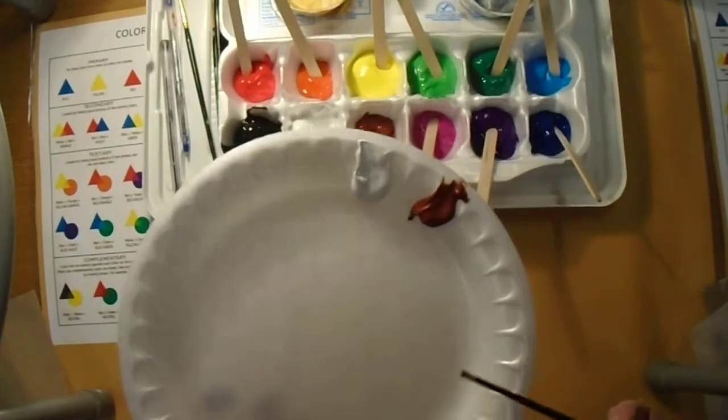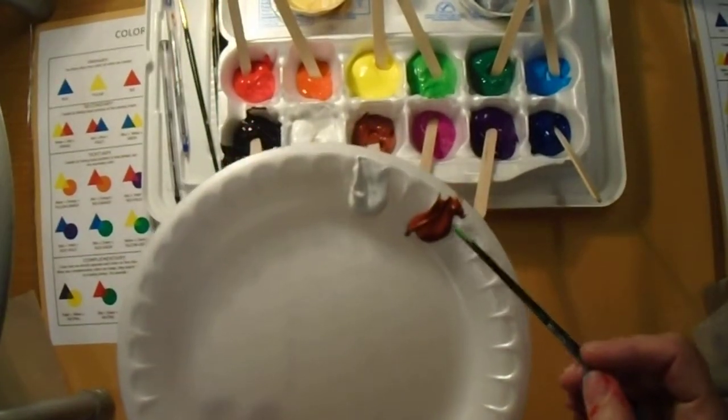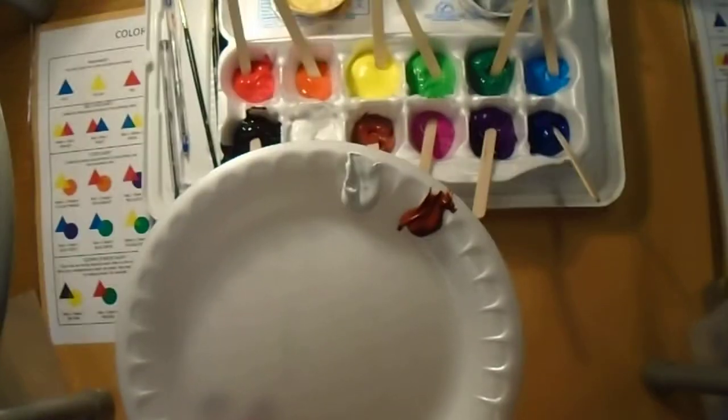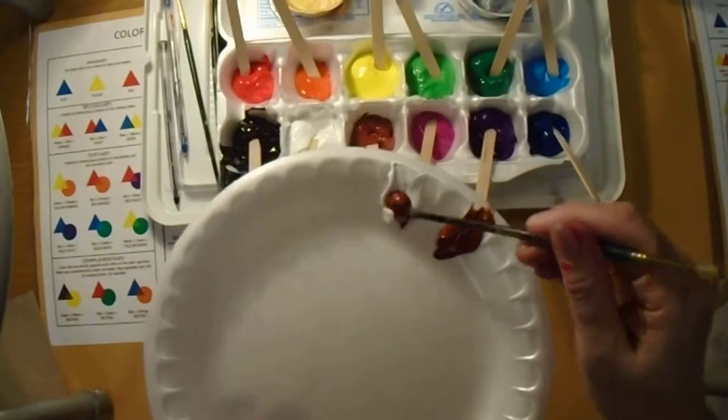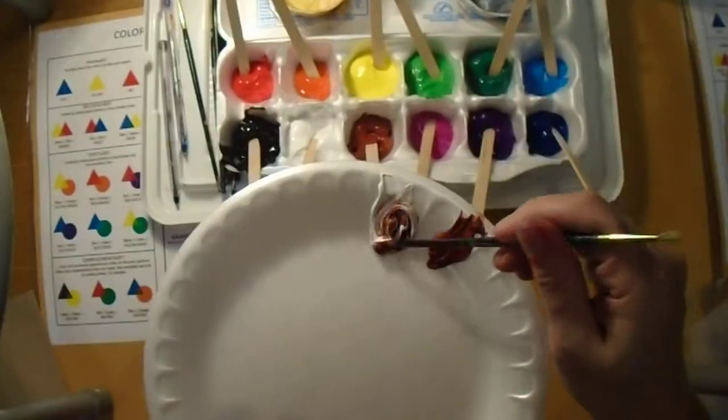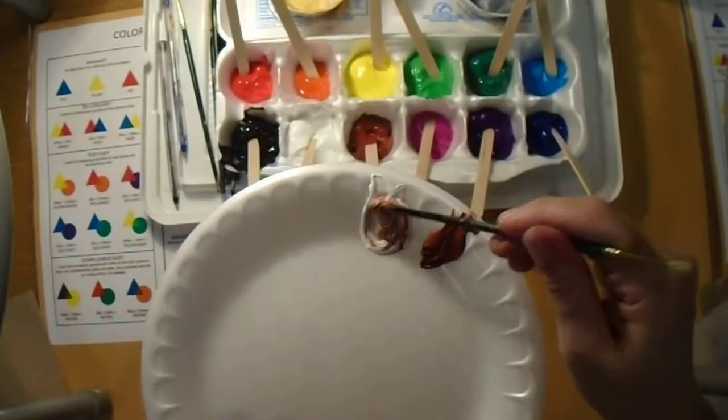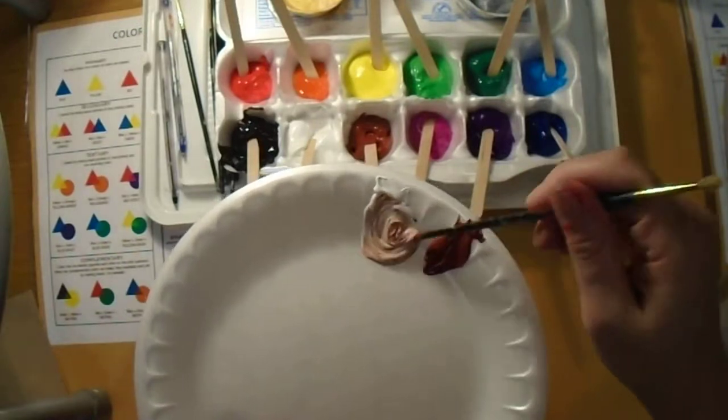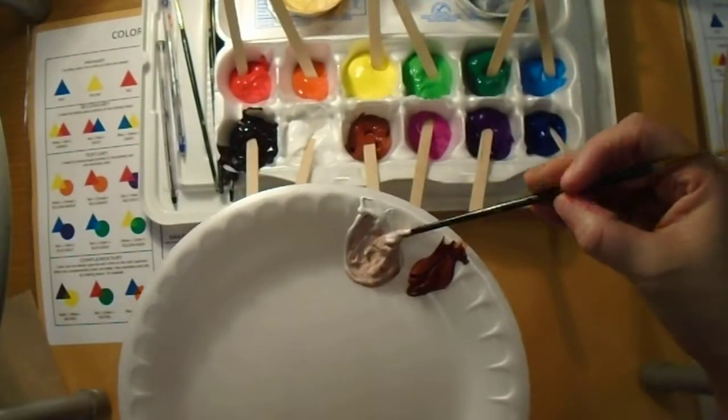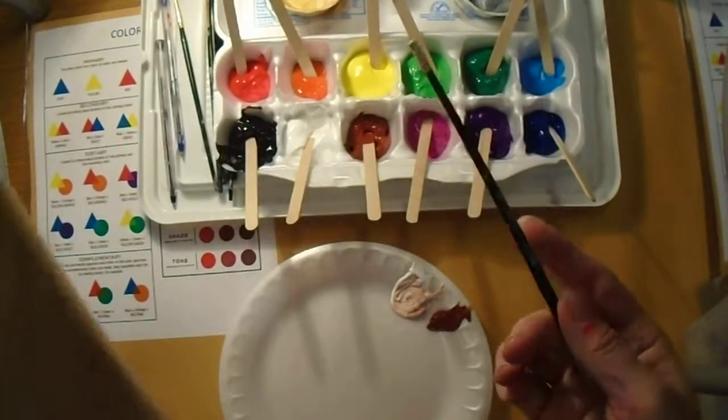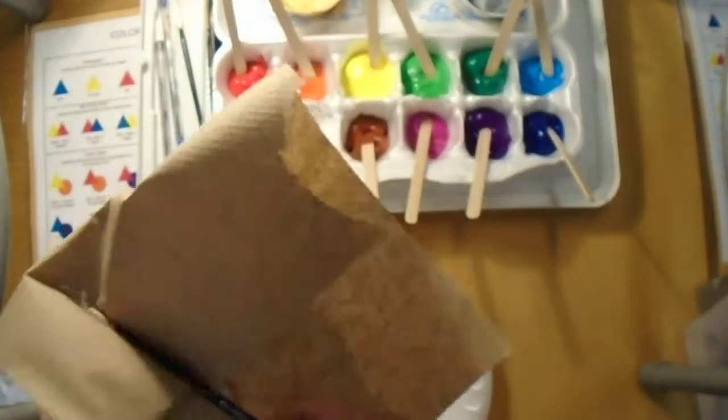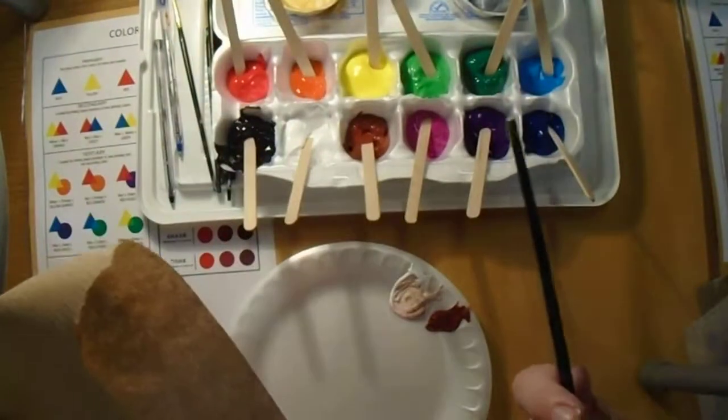Anytime you mix colors, you're always going to mix the dark color into the light color in small amounts. I'm going to scoop up some brown and I'm just going to start mixing that into the white until I get a color that I'm happy with. Then what I can do is just take my paper towel and just clean off the end of that handle real quick and easy before I start to paint.